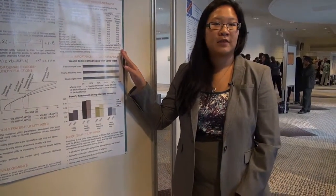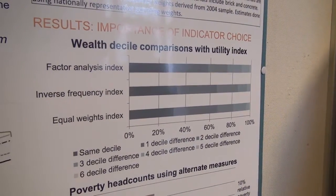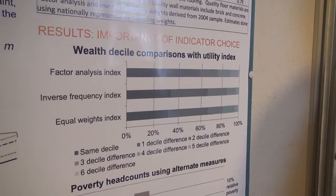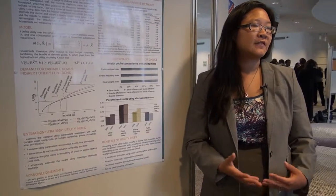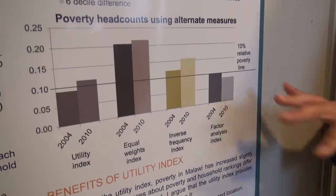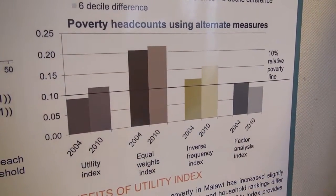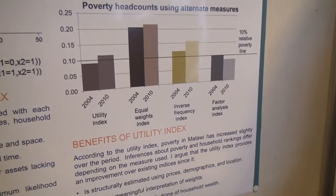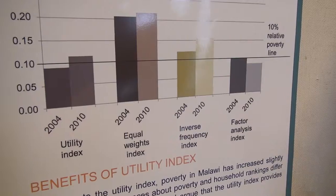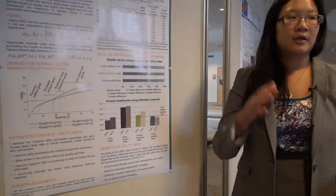In terms of how much the different weights matter for conclusions, I argue they matter a lot. The first bar graph shows that the wealth decile a household is assigned to depends very much on the index used — for instance, using the factor analysis index, over 40 percent of the sample is classified in a decile that differs from my benchmark by two or more groups. Similarly, poverty headcounts using a 10 percent relative poverty line from 2004 vary substantially, particularly for the equal weights and inverse frequency indices, which produce high poverty levels due to lumpy classification at the bottom of the distribution.